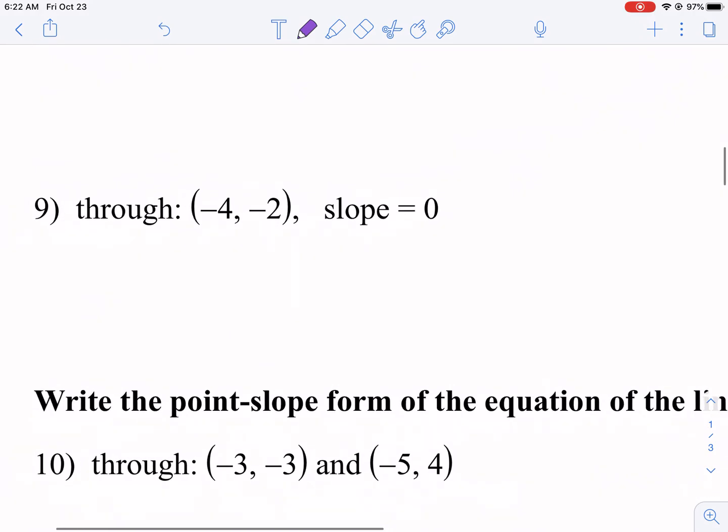This one's pretty interesting just because we have a slope of 0. So we have our x1, y1, m is 0. So we're going to have y plus 2, minus a negative 2 is plus 2, 0 times, and it doesn't even matter what we put here. So then we have y plus 2 equals 0. Technically, that's in point-slope form. But we could solve for y to get it in slope-intercept form. This is a horizontal line.